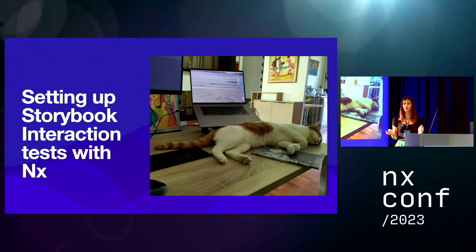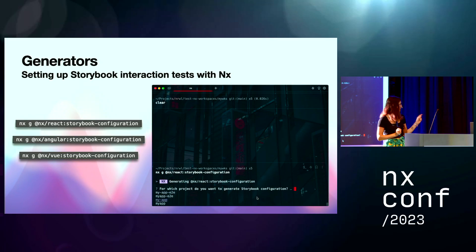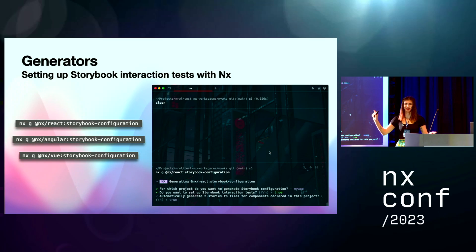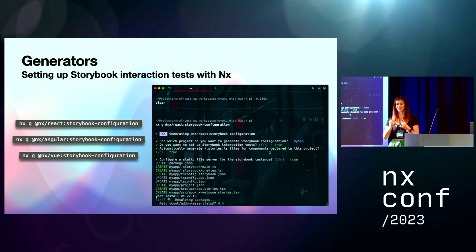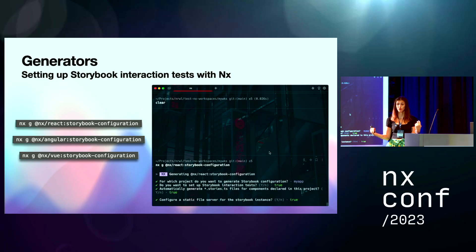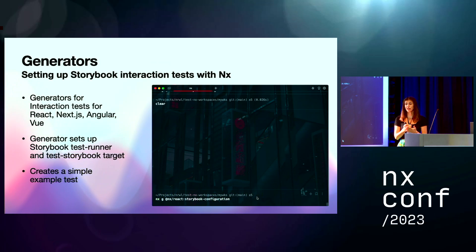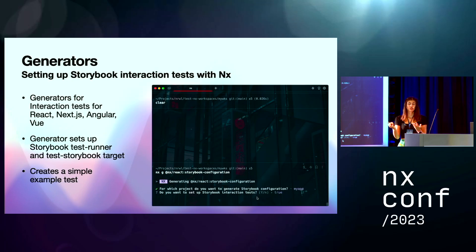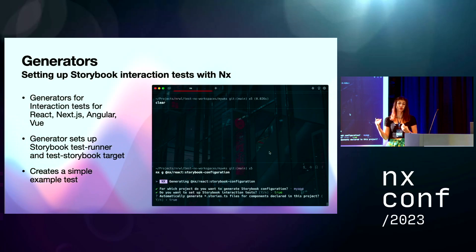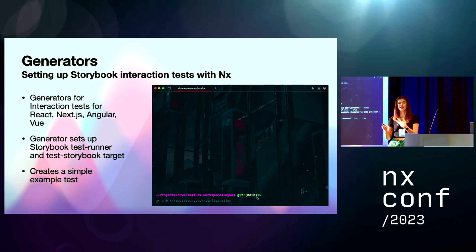How does NX help? Setting up Storybook interaction tests with NX — we have some generators for them. We have Storybook interaction test generators for React, Angular, and Vue. They build on the Storybook configuration generator, so if you're already using the Storybook configuration generator, it just generates interaction tests for you. The video is showing the generator in action. What they do is set up the interaction test, install the necessary dependencies, install the Storybook test runner, create a test Storybook target, and create a simple example test for you.